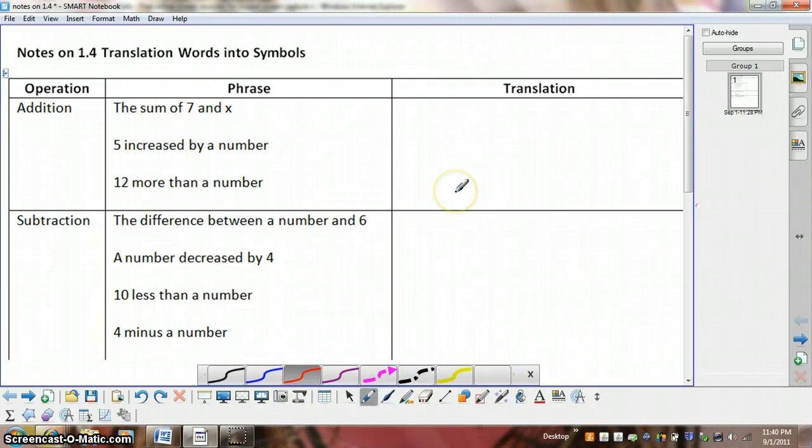For the screencast today for Algebra 1, we're going to take a look at translating from words into symbols. So we have addition, subtraction, multiplication, and division. We'll start off with ones that mean addition.